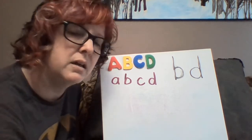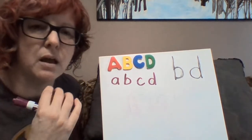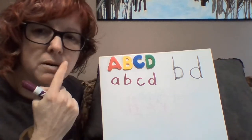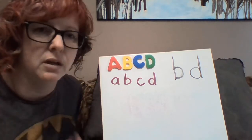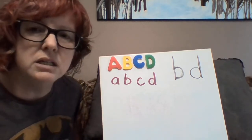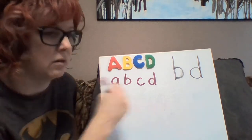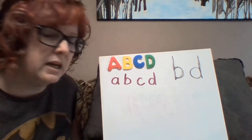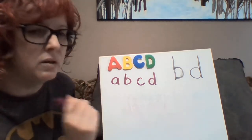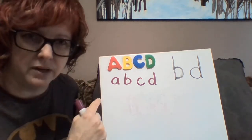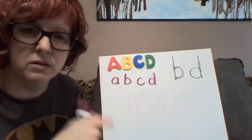Strategy number two is the sounds — your mouth is different when you say each sound. When you say 'b,' your mouth is in a line, so you can remember to do the line first. When you are saying 'd,' your mouth is open, so you can remember to draw the circle first. So with the 'b' sound, the line — draw the line first; 'd' sound, your mouth is open — draw the open circle first.